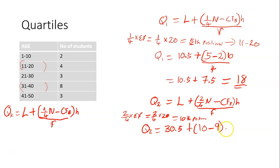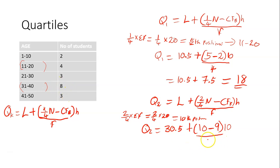Times H — the H means the difference between the lower limits or the upper limits, which is 10. Divided by the frequency of that particular class, which is the second quartile class. The frequency is 8.